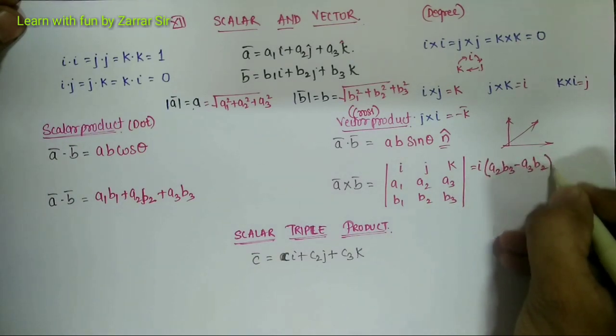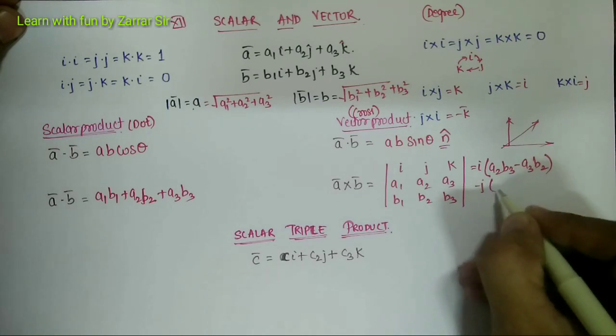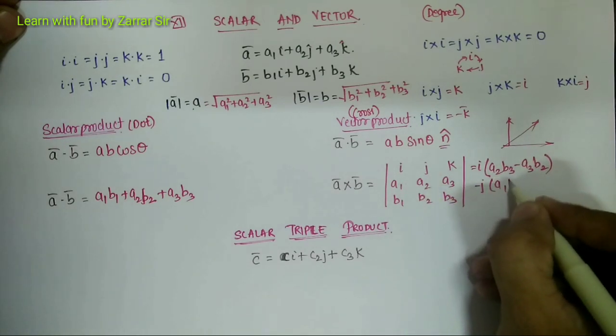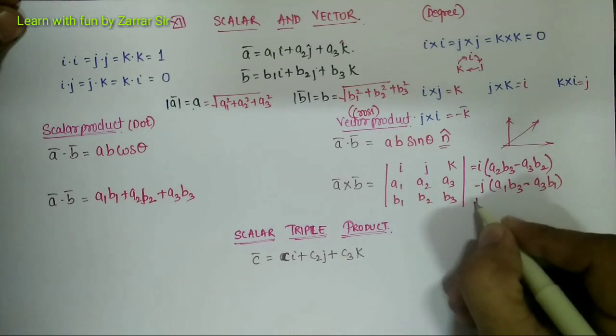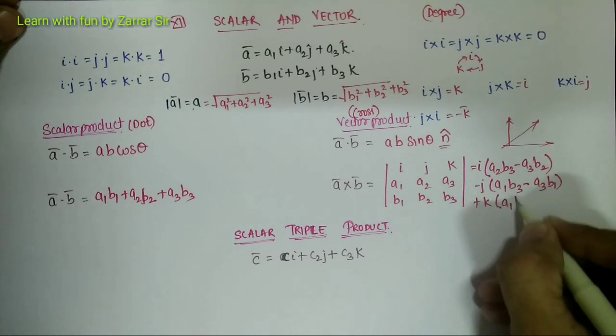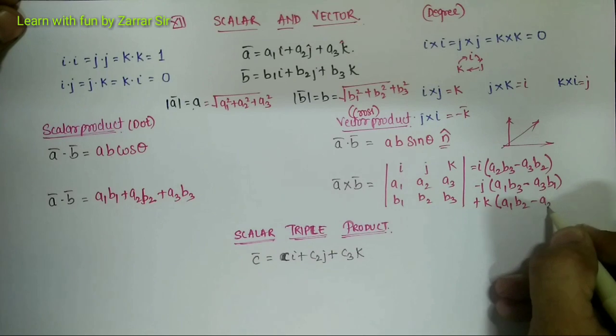I times a2 b3 minus a3 b2, minus j times a1 b3 minus a3 b1, plus k times a1 b2 minus a2 b1.